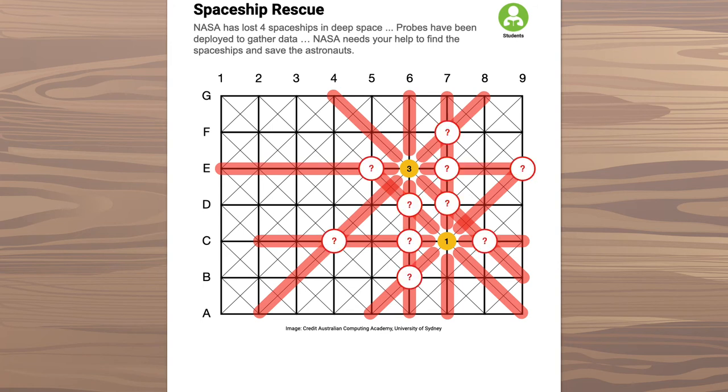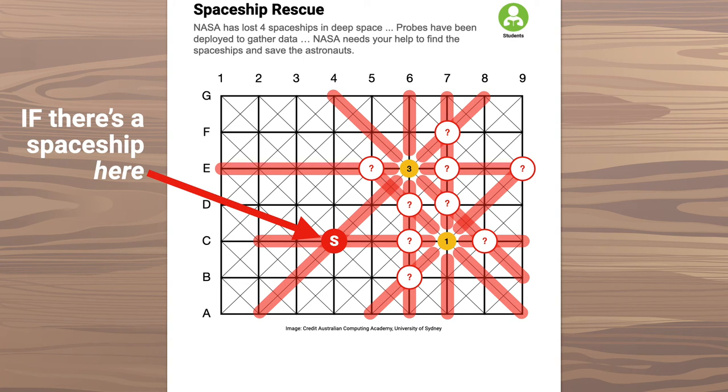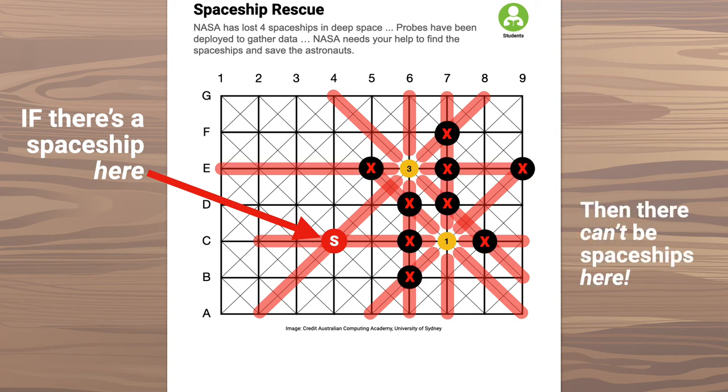It's possible there might not be a spaceship at any of these points. But one thing is for sure. If there is one spaceship at one of these points, we know that all the others must be empty.